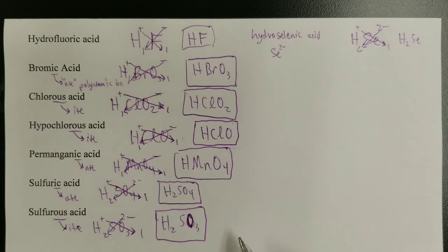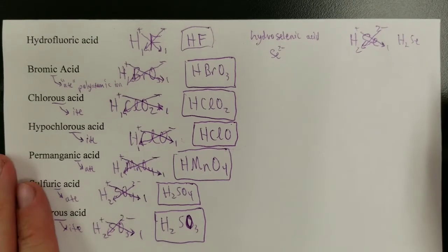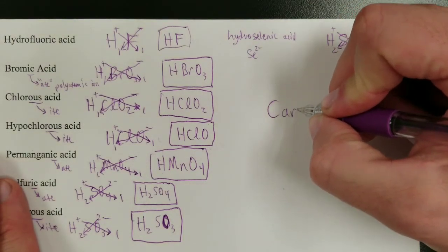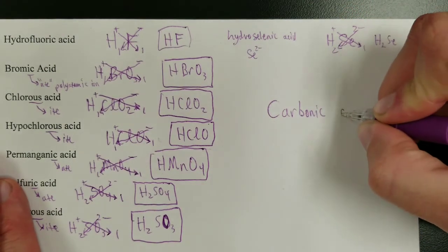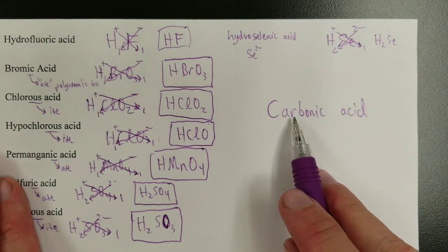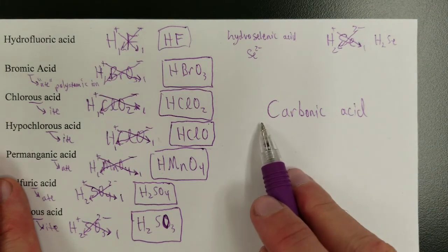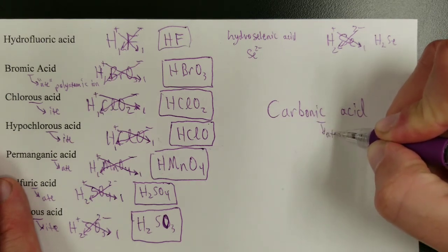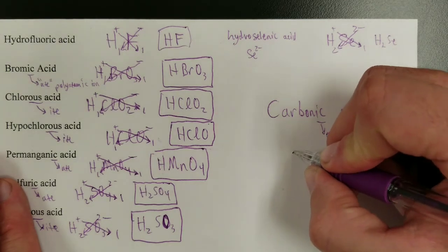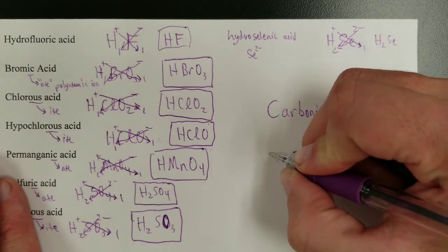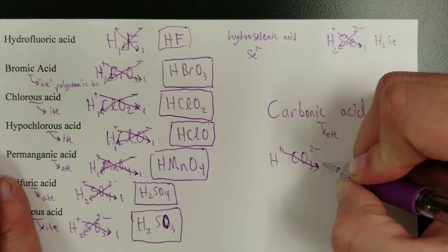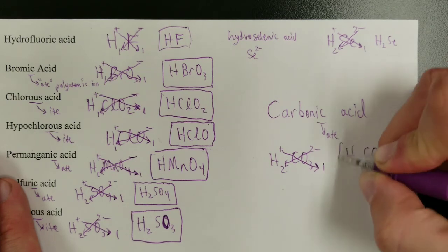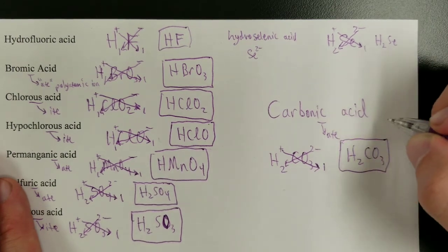This is the general process you'll use for anything covered in this class. For example, carbonic acid: no 'hydro,' so oxygen is present, and the '-ic' ending means carbonate. Carbonate is CO₃²⁻. With H-plus, one carbonate and two hydrogens gives H₂CO₃ — carbonic acid.